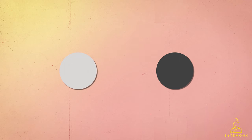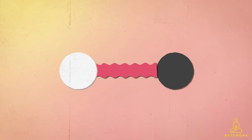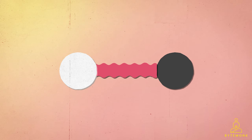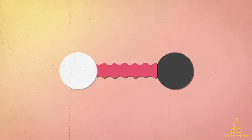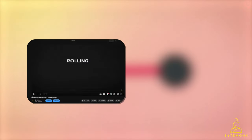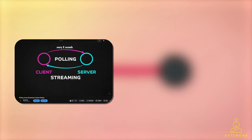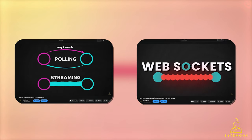Another way for computer systems to communicate is to have an open connection, which means they stay connected all the time. Imagine if you had to hold your phone up to your ear all day just in case your friend decided to call you — that would be like having an open connection. It can be fast, but it's not a practical solution for all situations because it ties up resources and can't handle many connections at once. You can check out my short videos on polling, streaming, and WebSockets to understand their applications.